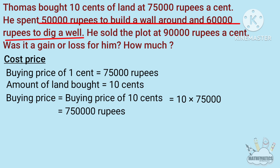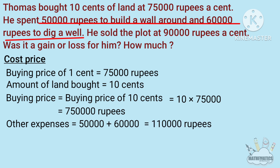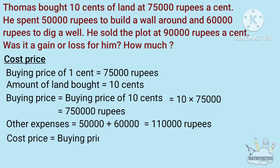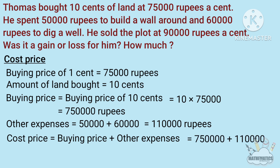Cost price is equal to buying price plus other expenses. Buying price is 7,50,000 rupees. Other expenses are 50,000 rupees plus 60,000 rupees, that is 1,10,000 rupees. So cost price becomes 7,50,000 plus 1,10,000 rupees.